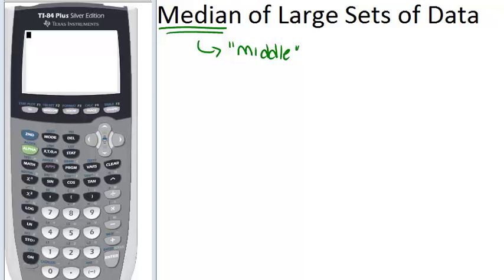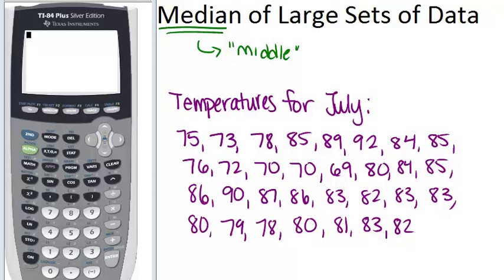Let's start by looking at a specific example of a set of data. Let's suppose these are the average high temperatures for some city in July, and we want to figure out the median of these temperatures. So one way to do that would be to use your calculator.